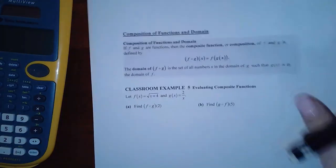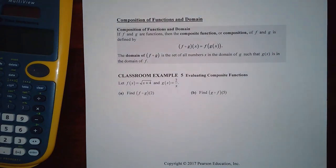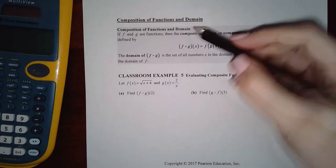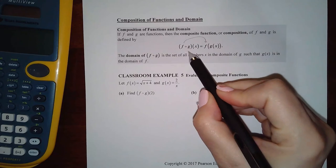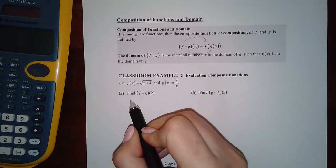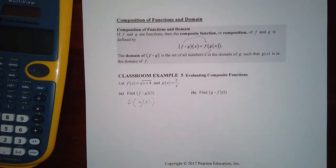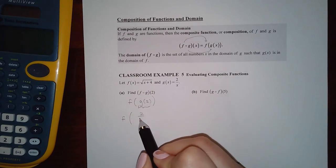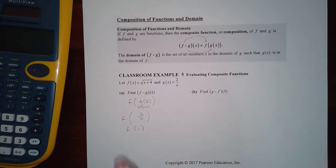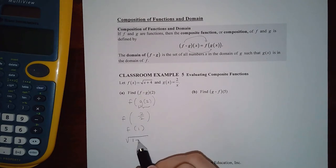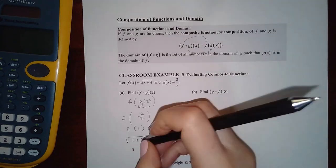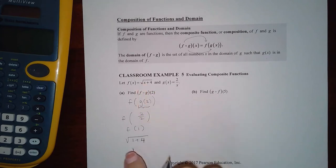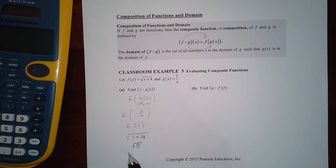Now we have composition, which is different — instead of adding, subtracting, multiplying, or dividing, we're plugging one function into a whole other function. The one on the outside stays outside; the one inside stays inside. For f(g(2)), keep f on the outside and g on the inside, then plug in 2. Work from the inside out: first find g(2), which simplifies to 1. Then find f(1) — that's 1 + 4 — giving the square root of 5, which cannot be simplified.